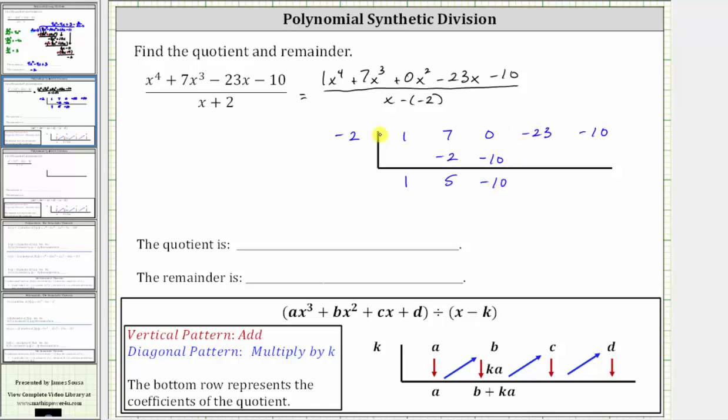Multiply by k, and negative 10 times negative two is positive 20. Add negative 23 plus 20 is negative three.